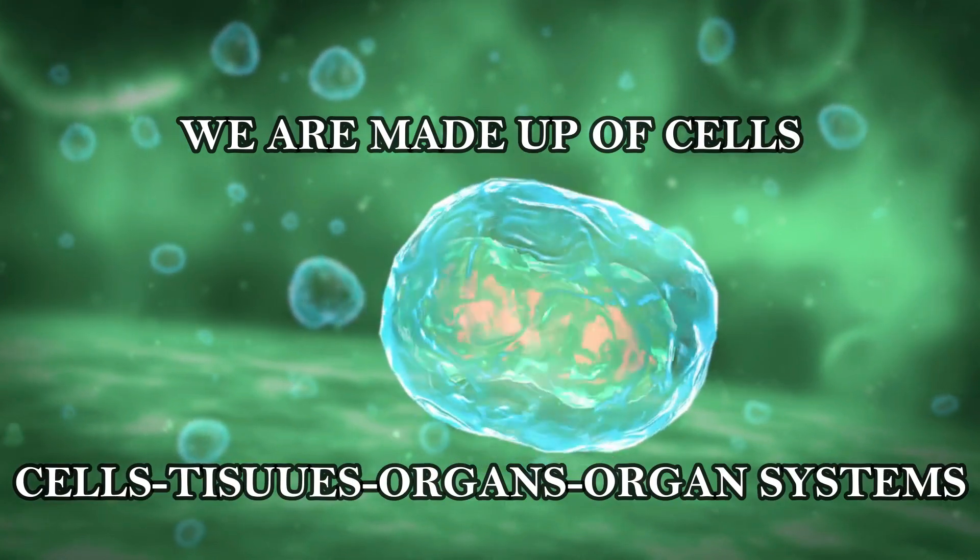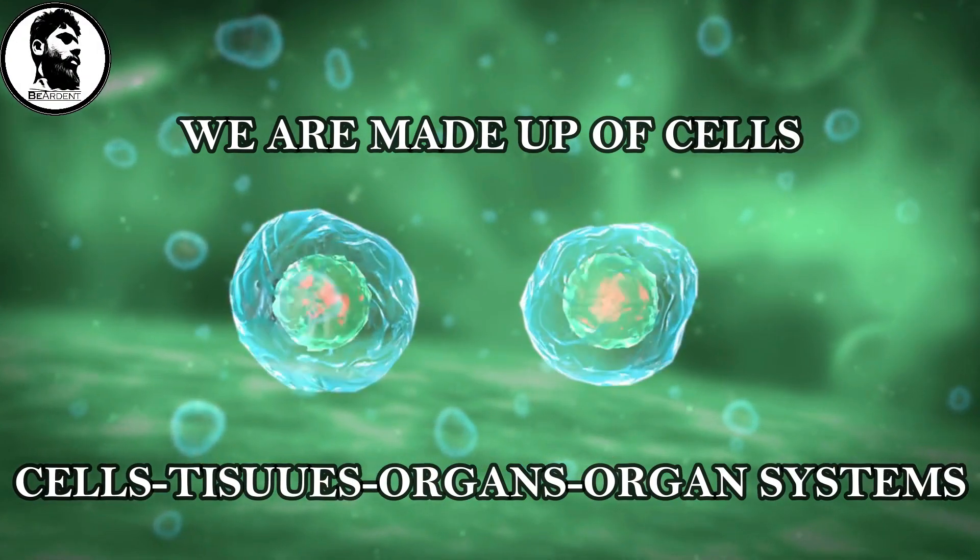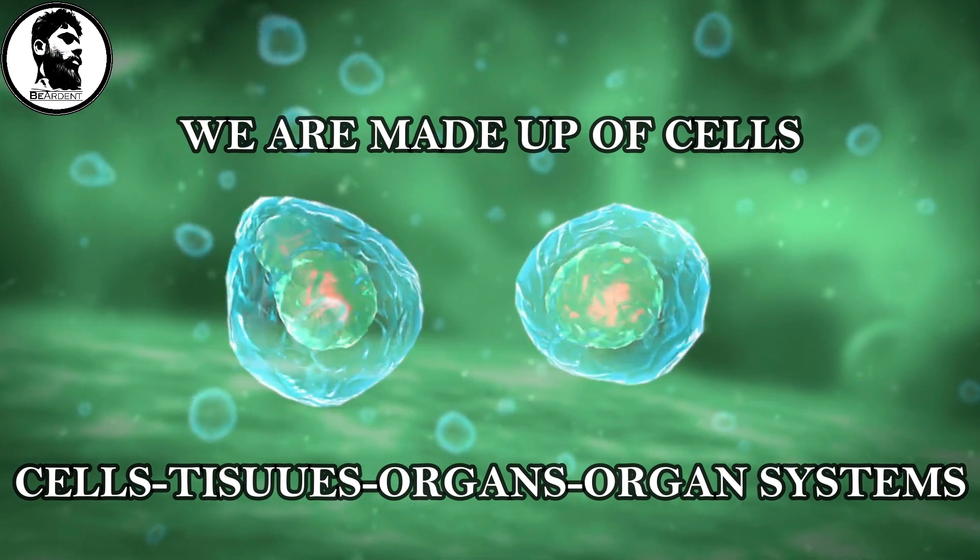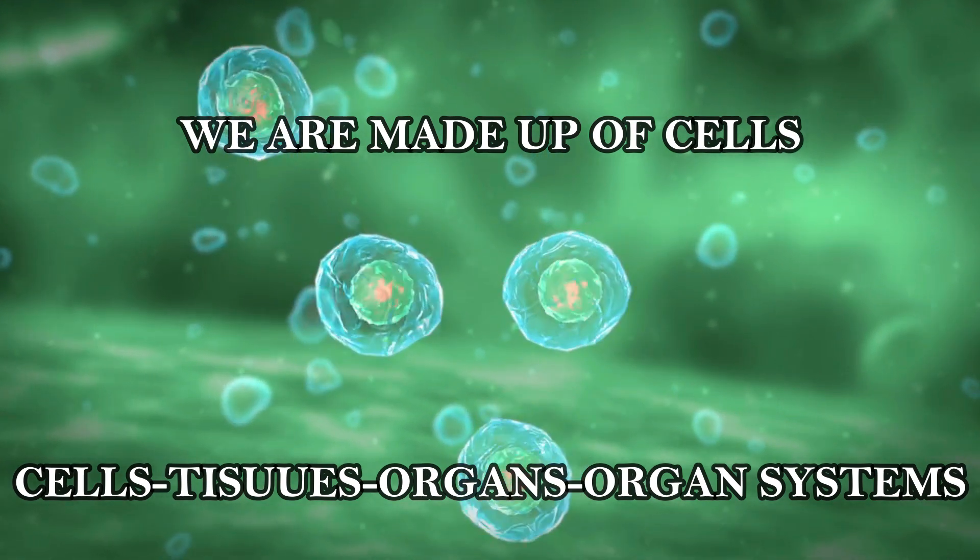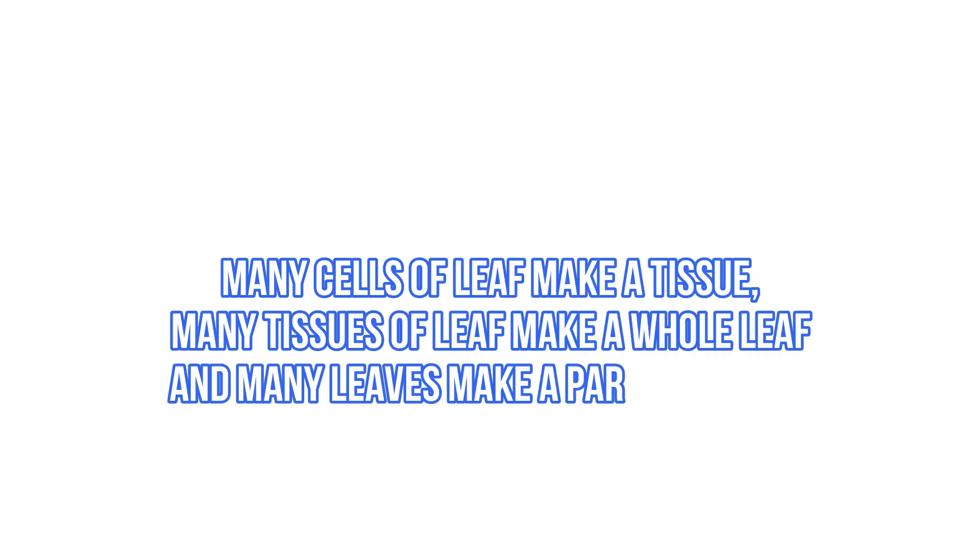So basically, we are made up of cells which make tissue, then organs, then organ systems. Same applies for plants. Many cells of leaf make a tissue. Many tissues of leaf make a whole leaf. And many leaves make a part of a plant. This is how cells make whole living organisms.